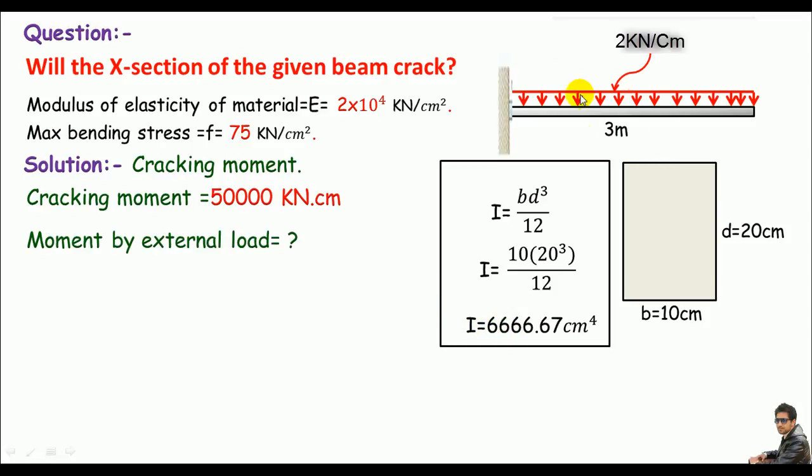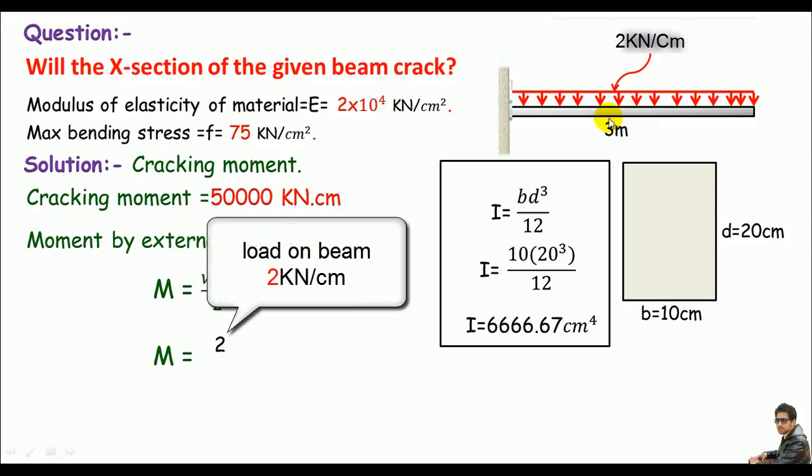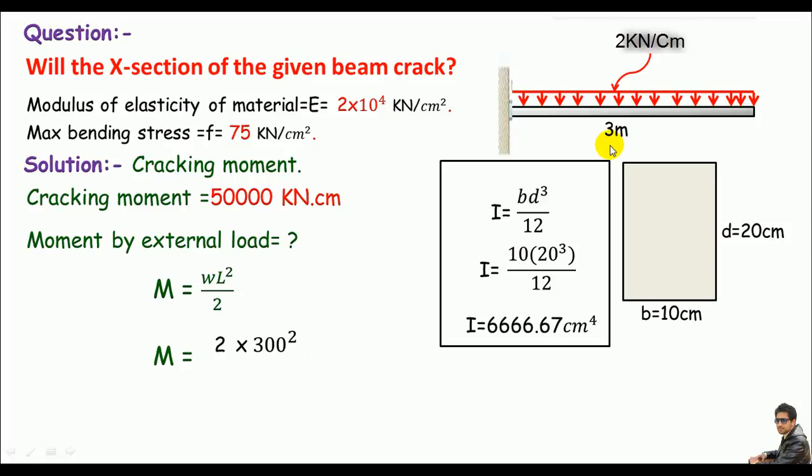Remember this is a cantilever beam with UDL, so I can use the equation wL²/2. The L represents the length of the beam which is 3 meters or 300 cm. So 300² divided by 2, I can get the moment caused by external load is 90,000 kN·cm.